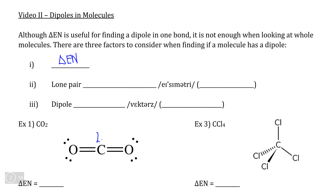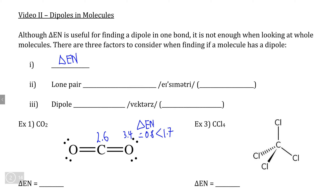If you check your periodic table, you'll see that the electronegativity of carbon is less than the electronegativity of oxygen, and we can confirm this with a simple electronegativity difference calculation. 3.4 minus 2.6 is 0.8, which we know is less than 1.7, so this isn't an ionic bond, but it's not zero either, which means that the electrons in each bond of the double bond are shared, but shared unequally.